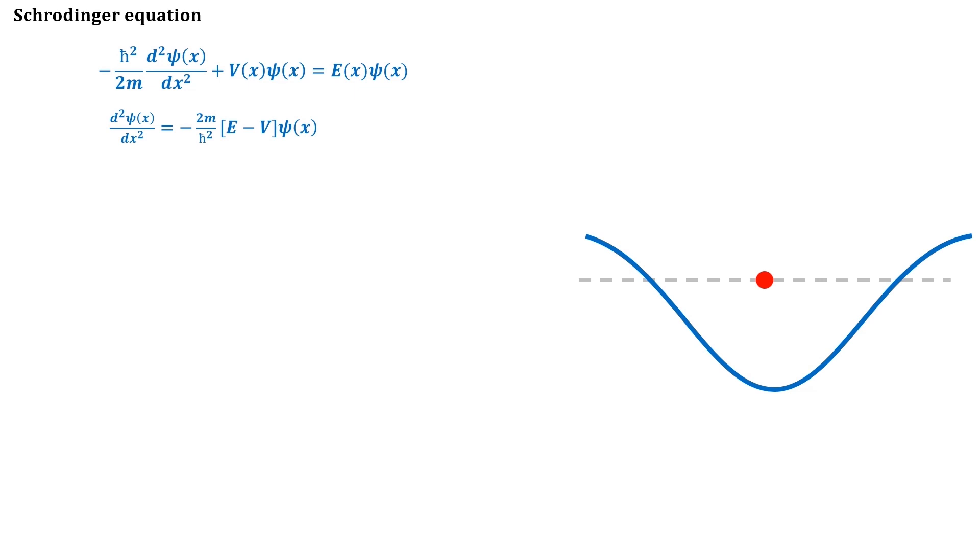When 2m(E minus V) is equalized to p square, d²ψ/dx² equals minus p square upon h cross square ψ, where p is the classical momentum of the particle. This is the classical formula for particle momentum.